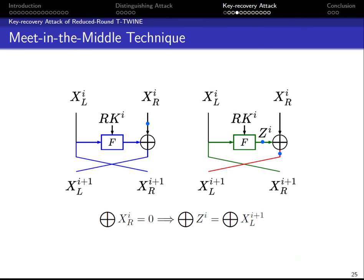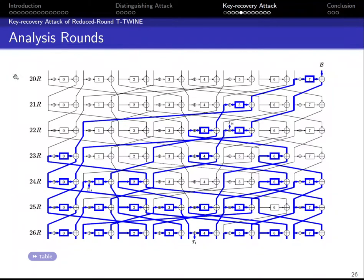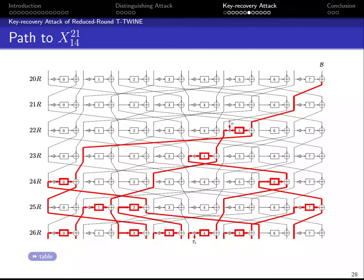To solve this problem, we employ the meet-in-the-middle technique. Instead of computing X_iR directly and checking if its XOR sum equals 0, we compute the XOR sum of Z_i and X_{i+1,L} separately and independently. Then we check if the two XOR sums are equal. Since the path to Z_i or X_{i+1,L} includes fewer round keys, the combined time to compute the two XOR sums is less than computing the XOR sum of X_iR directly.